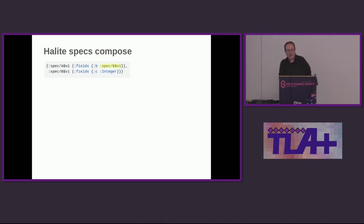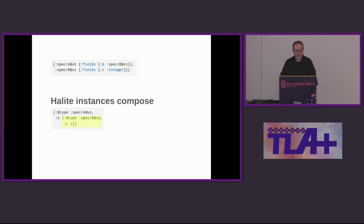In addition to refinement, specs also compose. Here I have spec B with one field, and spec A with a field which is of type spec B. So you can reference one spec from the other. That translates into instances like this: if you want to have an instance of A, you can have nested inside of that an instance of B.